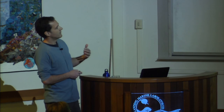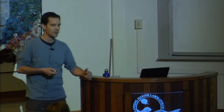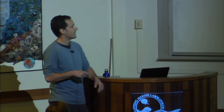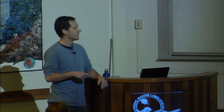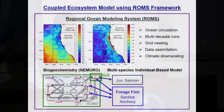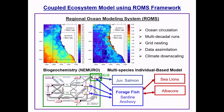Within the ROMS framework, we developed a multi-species individual-based model to look at the dynamics of forage fish in the California Current — specifically sardine and anchovy — as well as juvenile salmon. We then connected this to higher trophic level predators like sea lions and albacore, and also included a fishing fleet, though we've mostly focused on connections to higher trophic levels.